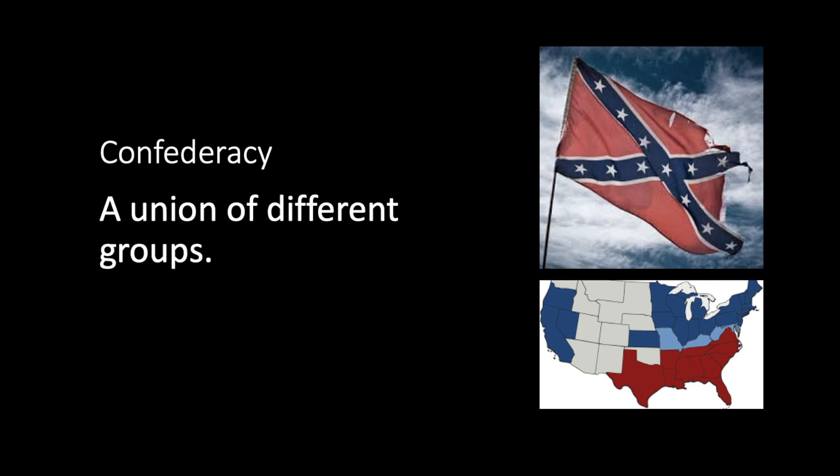The next word we have is confederacy. In the terms of the Civil War, confederacy is going to refer to the southern states. They came together to form the Confederate States of America. The actual definition of confederacy is a union of different groups, so these states in the South came together and formed a confederacy — the different group being the different states.